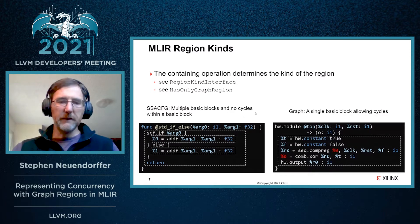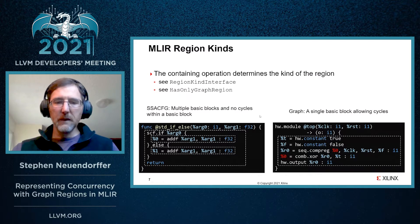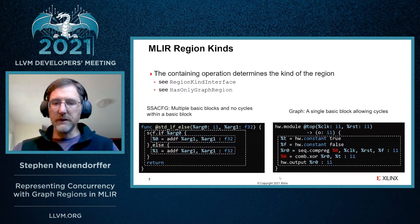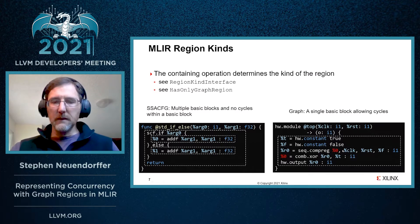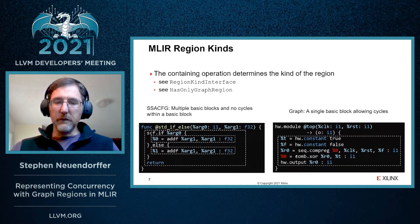An operation specifies the type of its regions using the region kind interface, or using the has-only-graph-region trait. On the right here, you can see a graph region — an operation that contains a graph region — where %0 is used before it's defined. This would not be legal in an ssacfg region, but it is legal in a graph region.